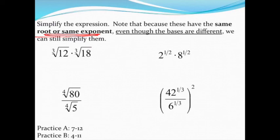Our first example has the cube root of 12 times the cube root of 18. Well, because both of those are inside the same radical, they're both inside of a cube root, I'm allowed to go ahead and multiply those two numbers inside together.